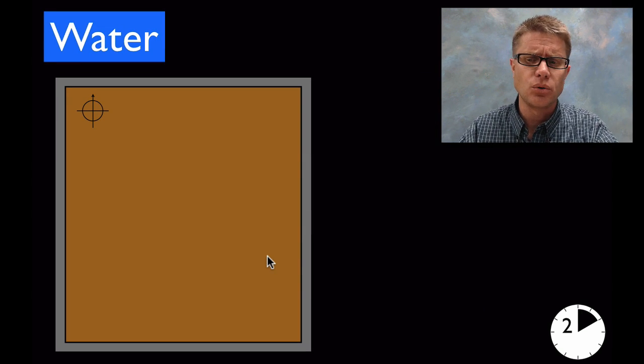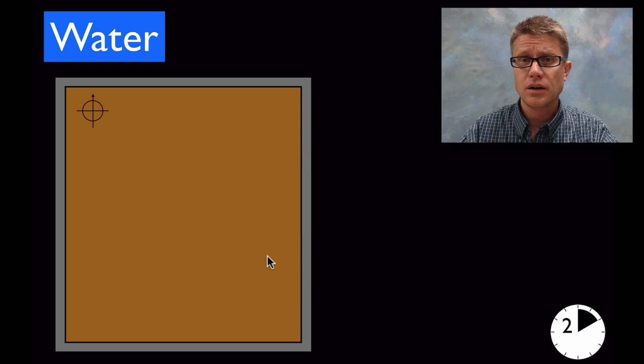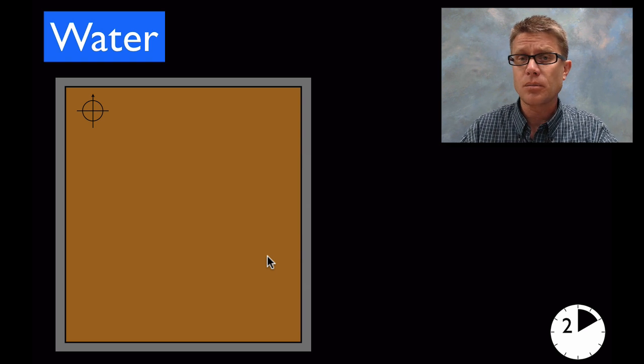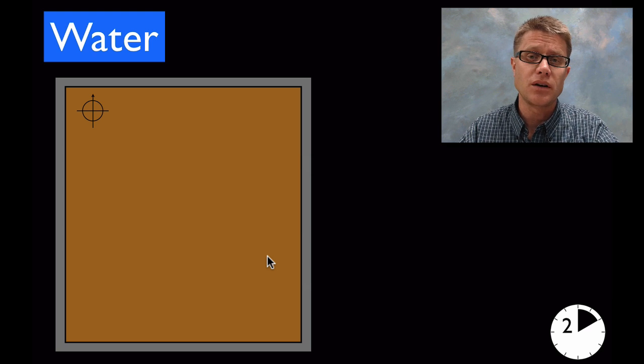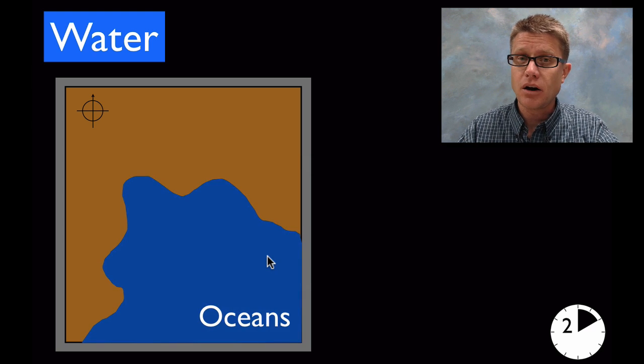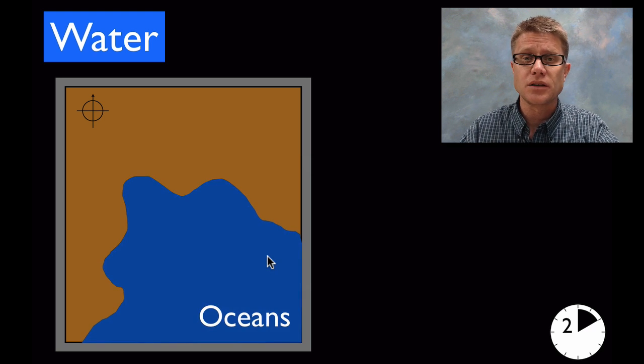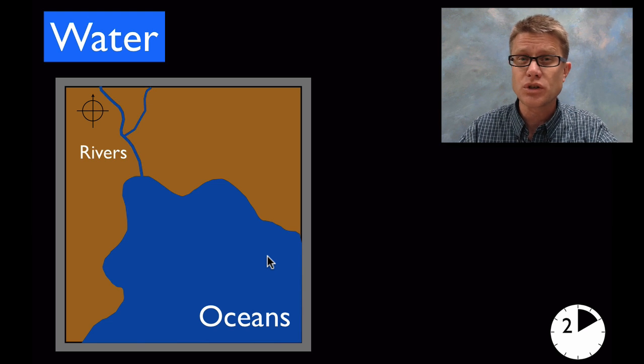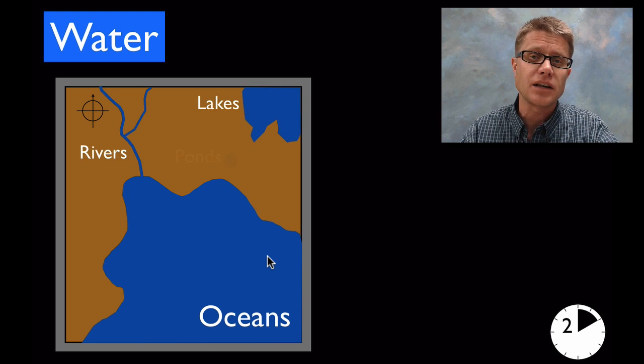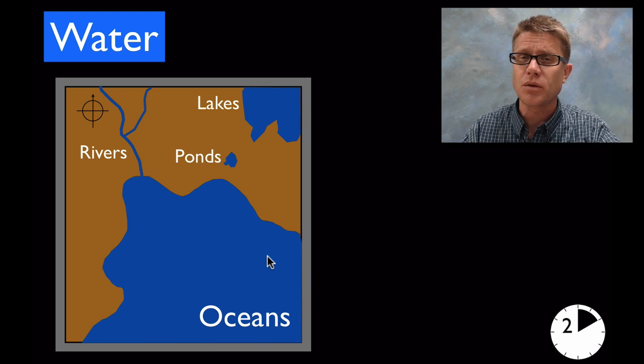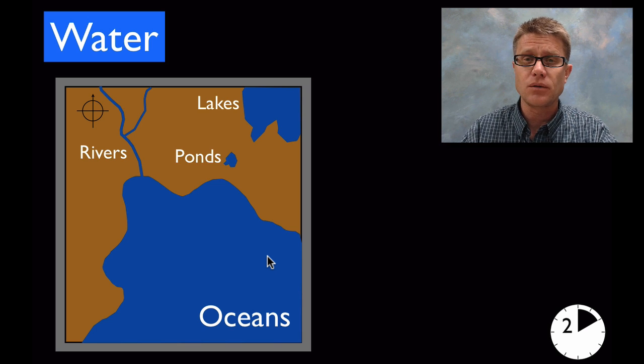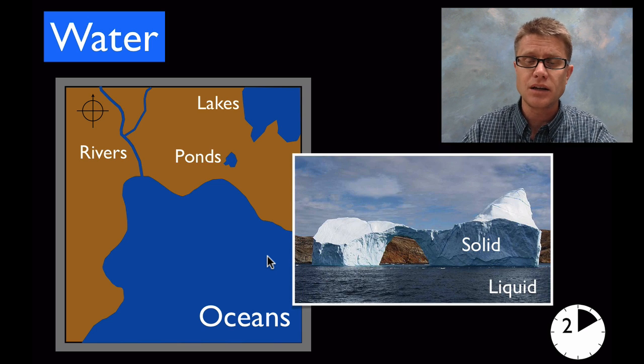And so how do we teach this in schools? Well in the lower elementary grades we want to start talking about water and where water is found on our planet. And so a map is a great way to figure that out. And so we've got oceans which are going to be large places on our planet. We've got rivers which tend to flow. We've got lakes and then we've got ponds. And so water is going to be found everywhere on our planet. And we can use maps to figure out where that is.